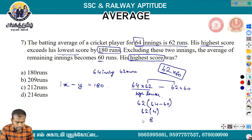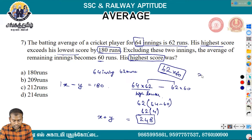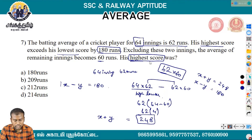64 into 62 minus 62 into 60: the difference is 64 into 62 = 3,968, and 62 into 60 = 3,720. The difference gives 248. The addition of the highest and lowest scores equals 248. We need to find the highest score, denoted x, and lowest score, denoted y.